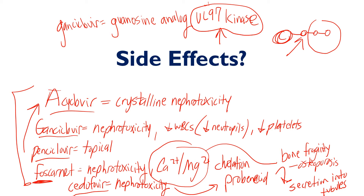For foscarnet, it's a pyrophosphate analog that binds the pyrophosphate analog binding site of DNA polymerase — so if the virus has a mutated pyrophosphate analog binding site, the drug is useless. For cidofovir, it inhibits viral DNA polymerase, so a mutated viral DNA polymerase renders it ineffective, and then the only damage being done is to host cells. If you learn the mechanisms of action, 90% of the time you already know the mechanism of resistance. This was the quick video on antiviral drugs treating HSV 1 and 2, cytomegalovirus, and varicella zoster virus.